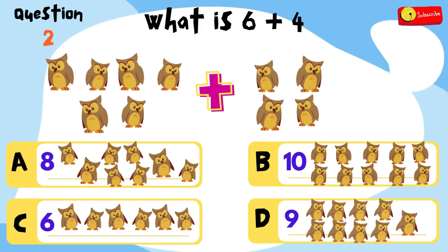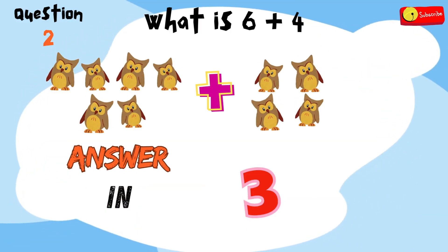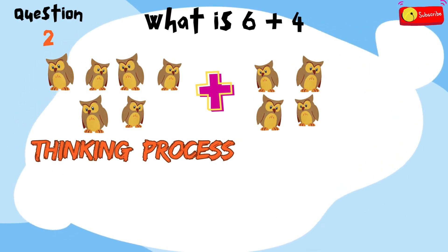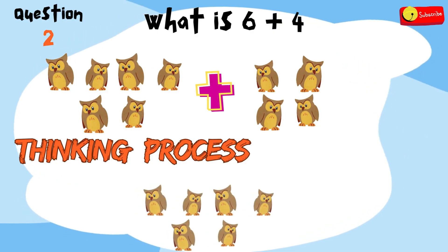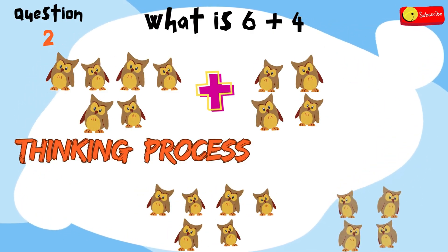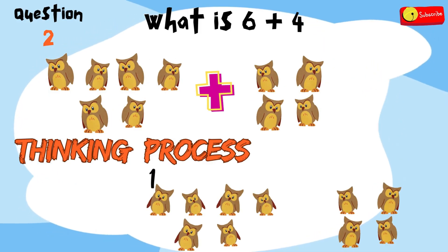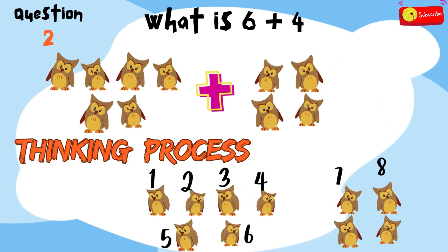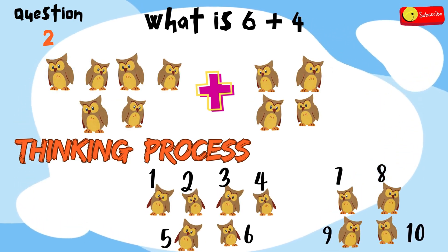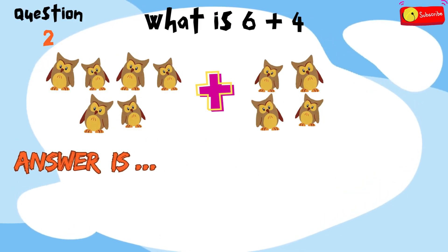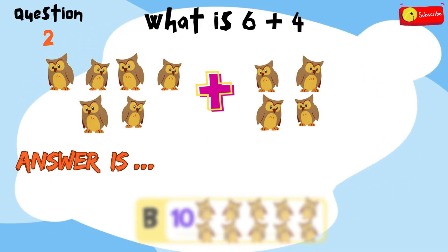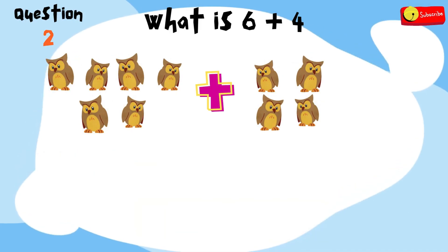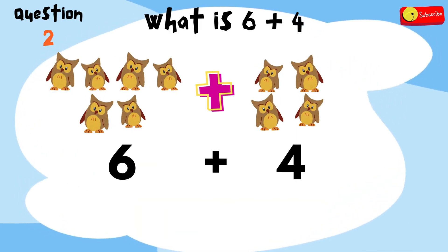All right, time's up! Here's the thinking process: if you have 6 apples and we add 4 more, in total we get 1, 2, 3, 4, 5, 6, 7, 8, 9, 10. So the answer is B — 10 owls. So, 6 plus 4 equals 10.